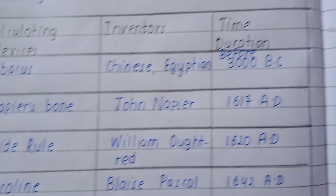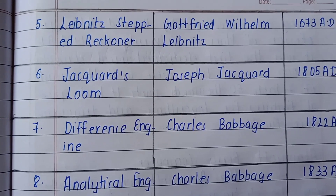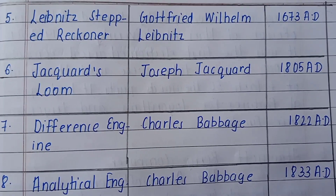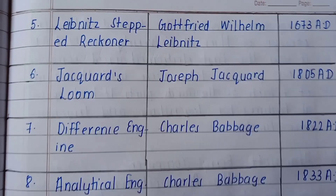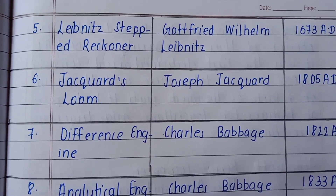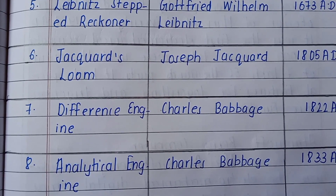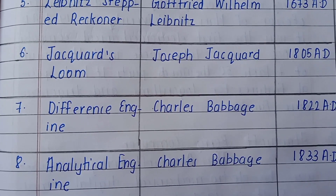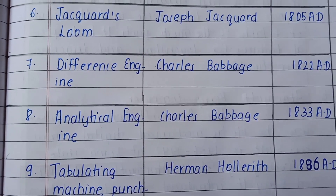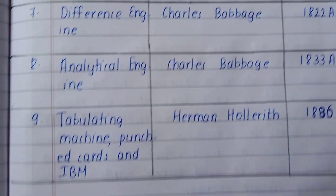The fourth device is the Pascaline, developed by Blaise Pascal in 1642 AD. The fifth device is the Leibniz Step Reckoner, developed by Gottfried Wilhelm Leibniz in 1673 AD. The Jacquard Loom was developed by Joseph Jacquard in 1805 AD. The Difference Engine and Analytical Engine were developed by Charles Babbage in 1822 AD and 1833 AD respectively.